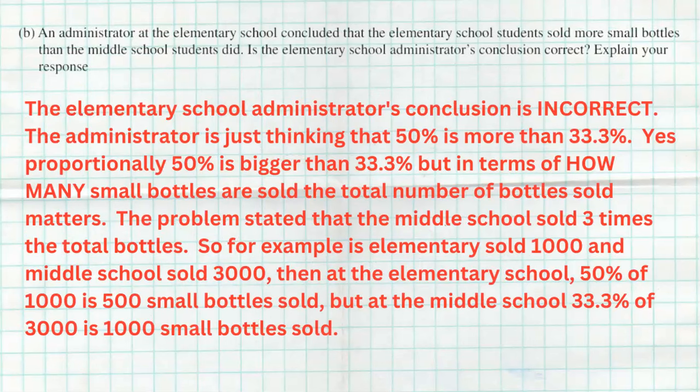So here's my answer: the elementary school administrator's conclusion is incorrect. The administrator's just thinking about 50% is more than 33%, and yes, proportionally 50% is bigger than 33.3%, but not in terms of how many bottles are sold because the total number of bottles sold matters. The problem says that the middle school sold three times the total bottles. So for example, the elementary school sold a thousand bottles, that means the middle school sold three thousand. So at the elementary school, 50% of a thousand would be 500 that were small, but at the middle school, 33.3% of 3,000 is a thousand small bottles sold, and obviously a thousand is more than 500. So even though 50% is bigger, when it comes to a much bigger total, it's not always the case.